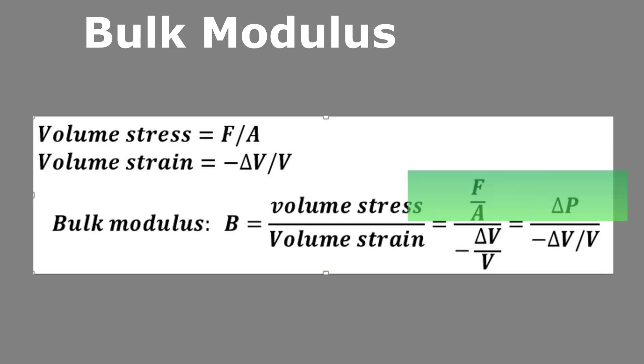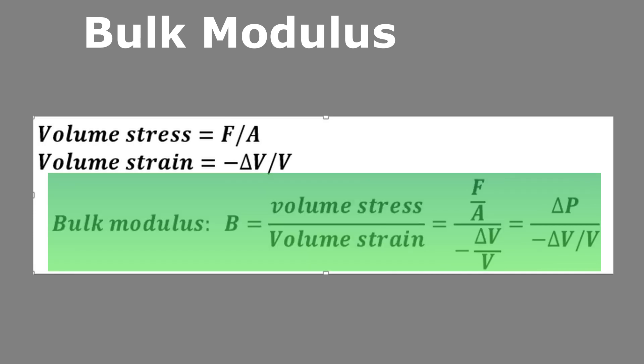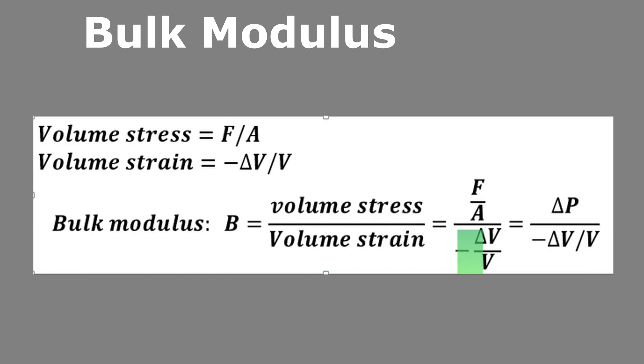F/A can be denoted as ΔP, or change in pressure. So bulk modulus B equals ΔP divided by -ΔV/V. This is the equation for calculating bulk modulus. The negative sign is inserted because increasing pressure causes a decrease in volume, and the value of bulk modulus is always positive.